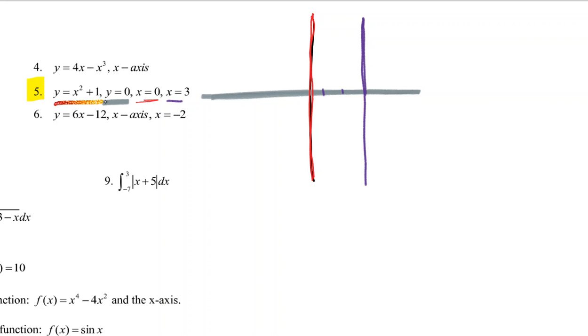And x squared plus 1 is going to look like this. So all of those equations are going to box in some area.